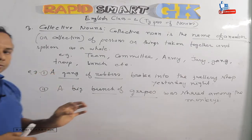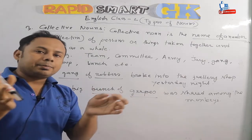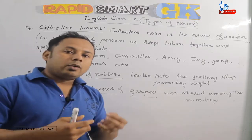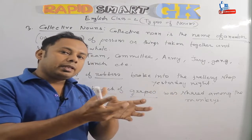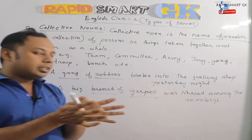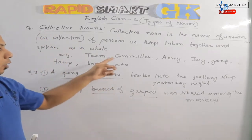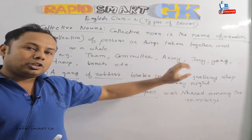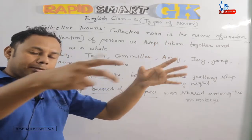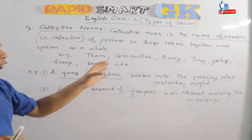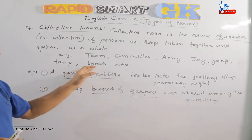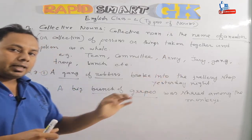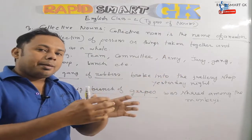For example, collective nouns include: team, committee, army, gang, bunch, group. These words represent a collection of persons or things, which is why they are called collective nouns. For example, your family is a collective noun.